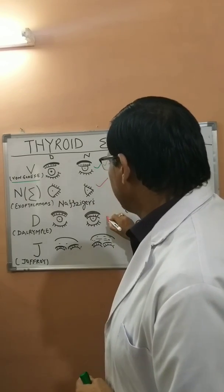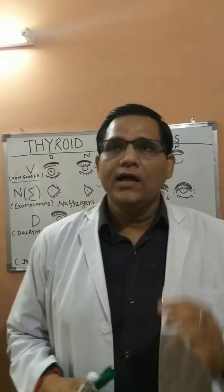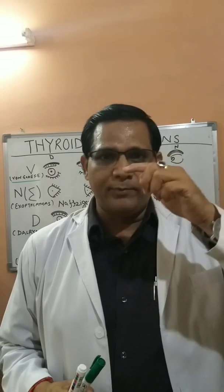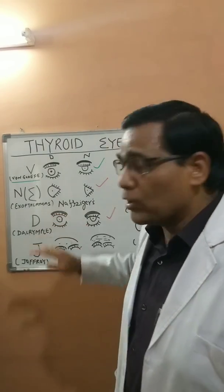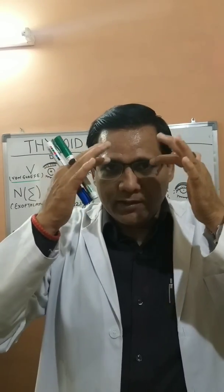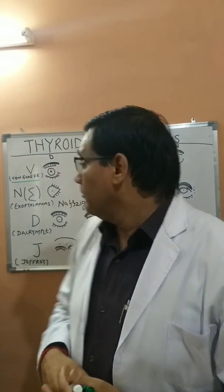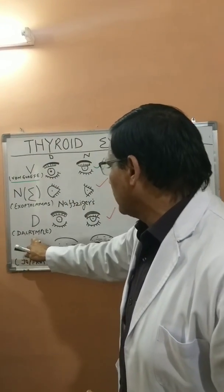The third sign is Dalrymple's sign. In this sign, because of widening of the palpebral fissure, the upper eyelid gets retracted. Normally when you look straight ahead, you cannot see the upper part of the sclera — your vision starts at the level of the pupil. But in this case, there is retraction of the upper eyelid and you will be able to see the upper part of the sclera. This is called Dalrymple's sign.